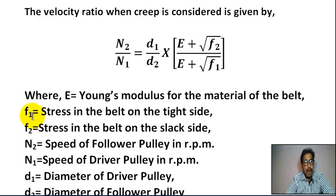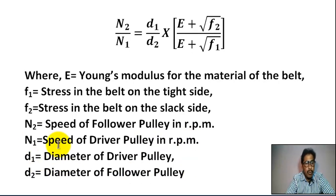f1 equals stress in the belt on the tight side. f2 equals stress in the belt on the slack side. N2 equals speed of follower pulley in RPM. N1 equals speed of driver pulley in RPM. d1 equals diameter of driver pulley. d2 equals diameter of follower pulley.